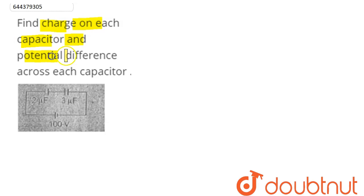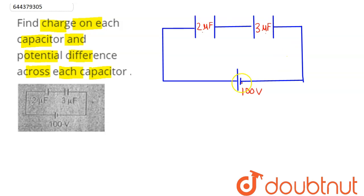The question is: find the charge on each capacitor and the potential difference across each capacitor. Here is our diagram — let us redraw it. This is our circuit having a battery of 100 volts, a 2 microfarad capacitor, and a 3 microfarad capacitor.